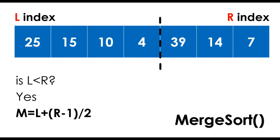Paano ba natin hahatiin ang pitong array blocks? We are going to divide it using the given values of the array, and on this stage we are going to put an indicator and boundary and call them the left and right index respectively.